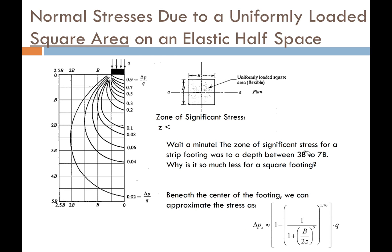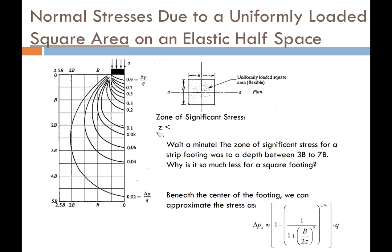What if you have a square load, such as a square footing? We can use the solution shown here. This is the isobar solution for a square load. Looking at the 10% to 20% range, the depth of the zone of significant stress is anywhere from one and a half times the width to two times the width below the footing — the zone where the soil is really going to compress and feel the stress from the applied load.